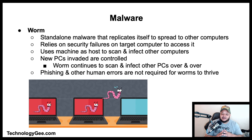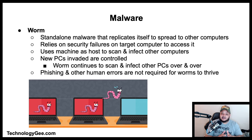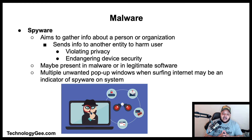A computer worm is a standalone malware program that replicates itself in order to spread to other computers. It often uses a computer network to spread, relying on security failures on the target computer to access it, then uses that machine as a host to scan and infect other computers. This behavior continues as newly invaded computers are controlled. Phishing and other human errors are not required for worms to thrive.